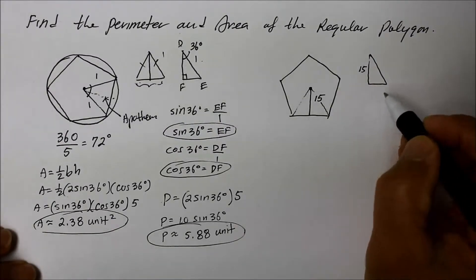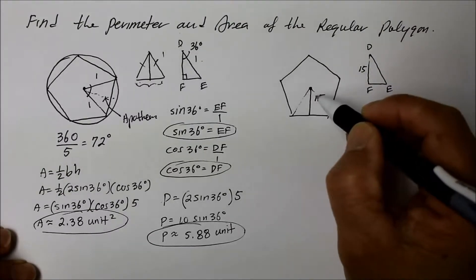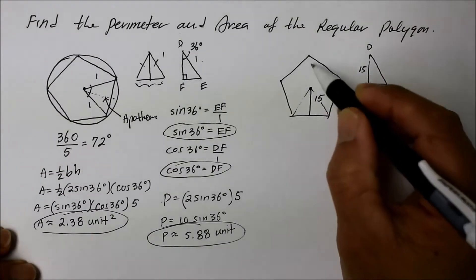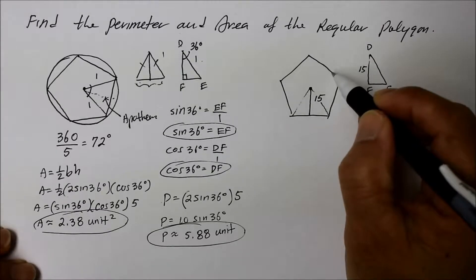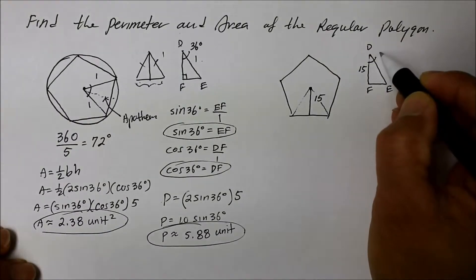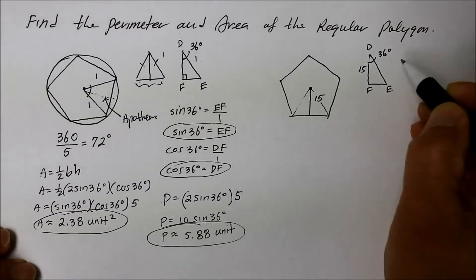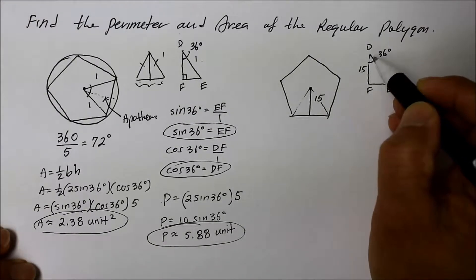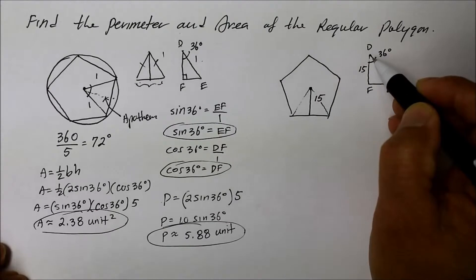Let's label this again DEF. So once again, we know that out of 360 divided by 5, it's going to be 72 degrees. And since we took half of that 72, this is going to be 36 degrees. So we're going to use that point as a point of reference to use our trig identities.